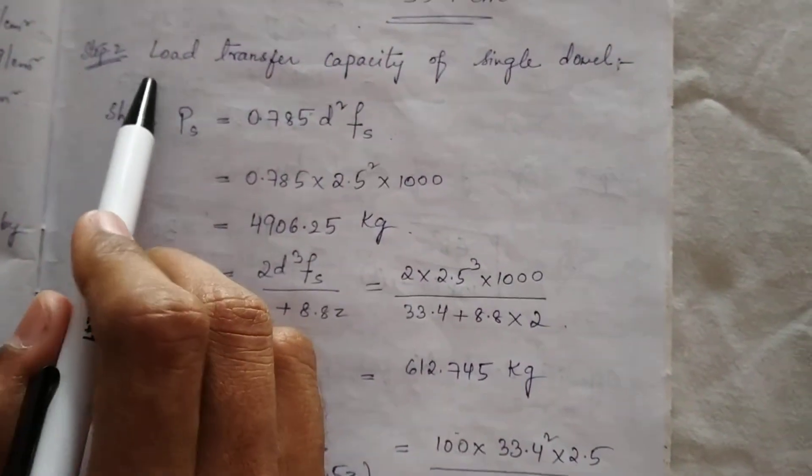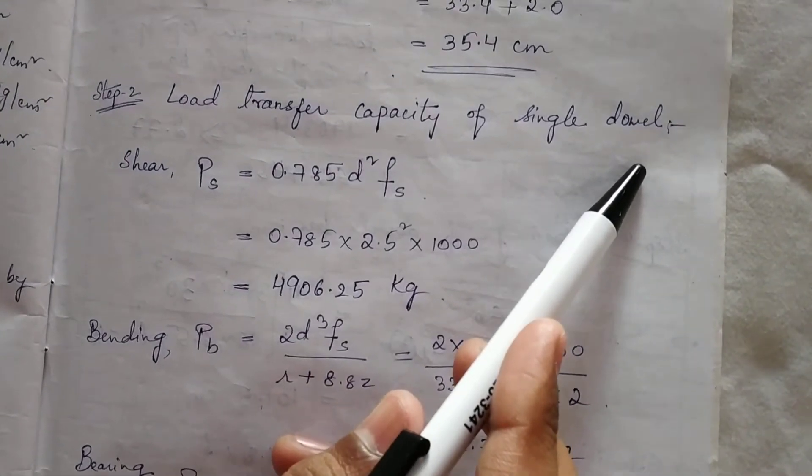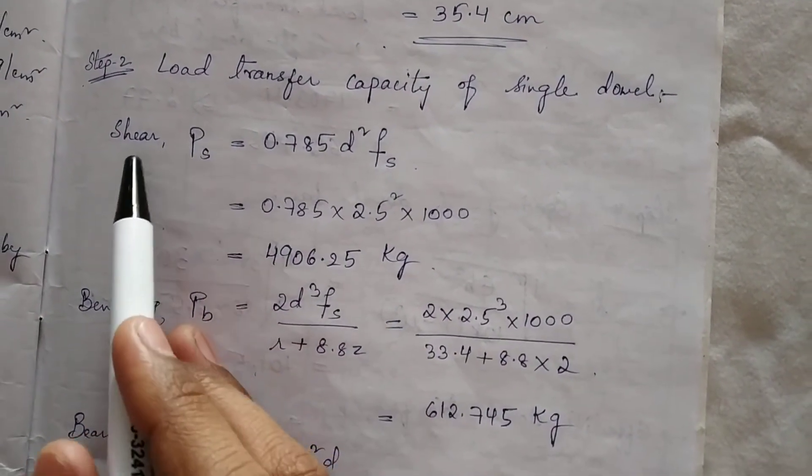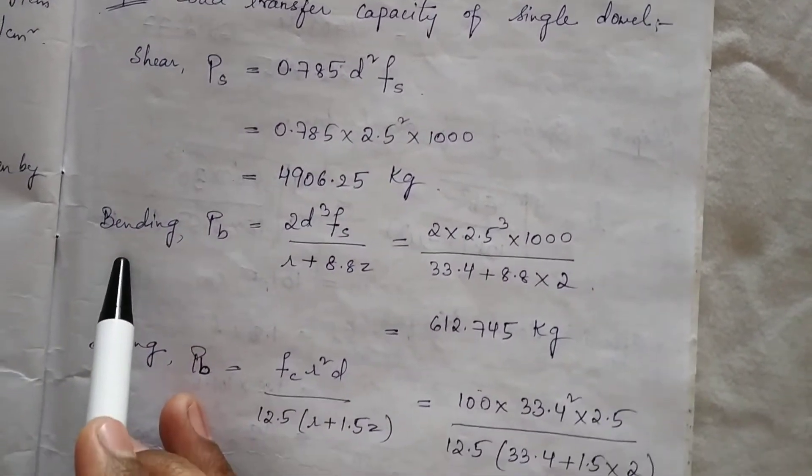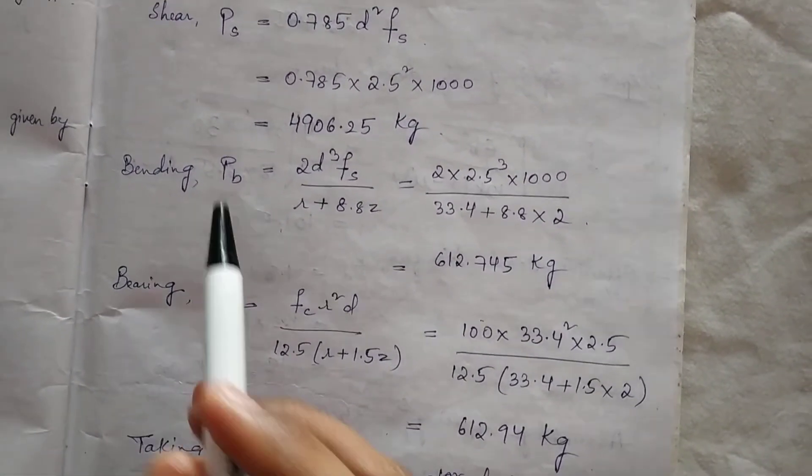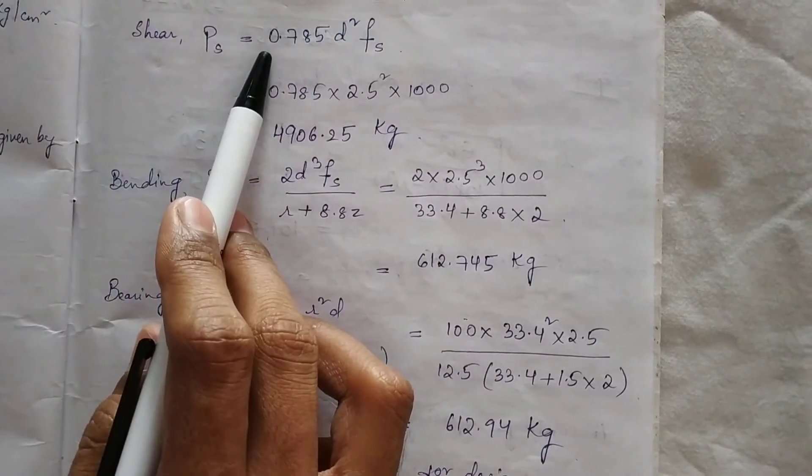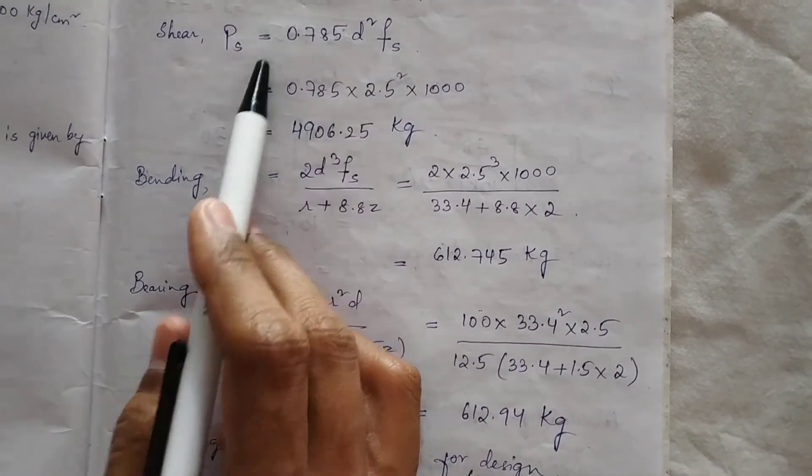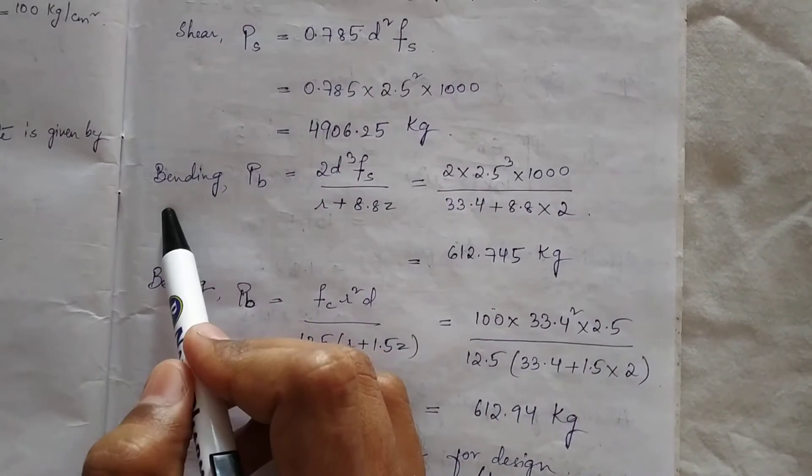Step 2: Calculation of load transfer capacity of single dowel. In this we have to calculate load for shear, load for bending, load for bearing. For shear, Ps = 0.785×d²×Fs. We have the values, substitute and get result in kg. Next, the formula for bending: